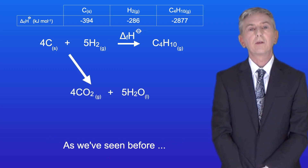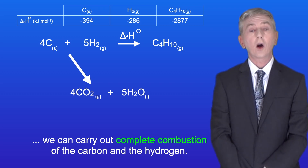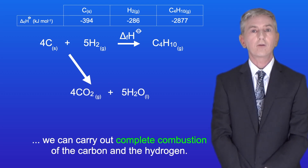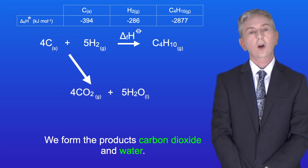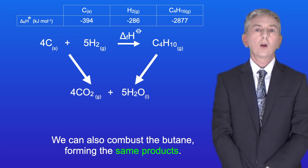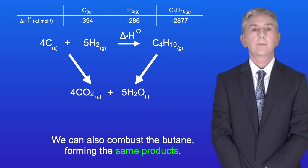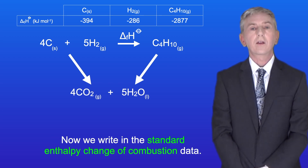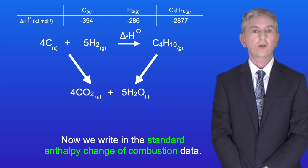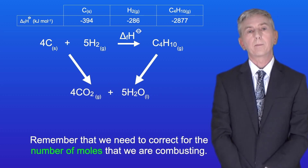As we've seen before, we can carry out complete combustion of the carbon and the hydrogen and we form the products carbon dioxide and water. We can also combust the butane forming the same products. Now we write in the standard enthalpy change of combustion data. Remember that we need to correct for the number of moles that we're combusting.